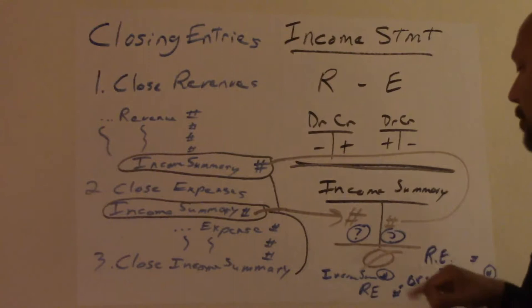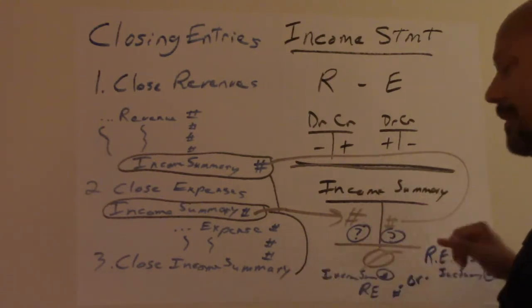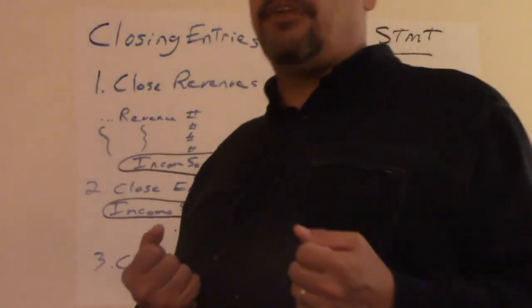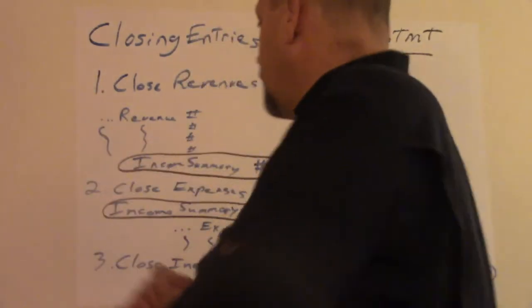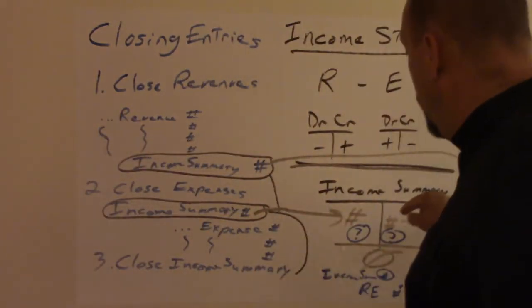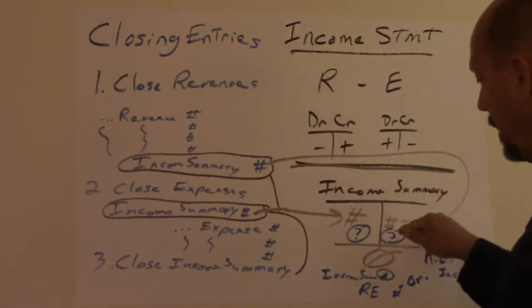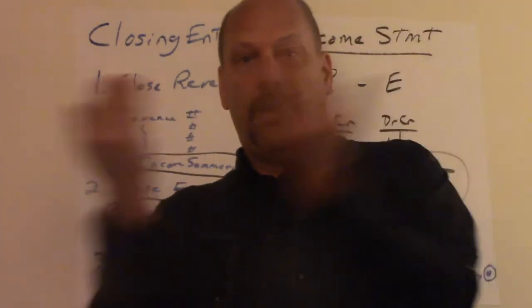So what happens? You have the two numbers and we need to close income summary out. And we close that one to retained earnings. The question is, do we debit or credit? And the answer to that one is the ever good, me being an accountant and an attorney, depends. What does it depend on? Do you need to add a number here to make these two numbers equal this one? Or do you need to add a number as a credit so these two numbers equal that one? You have to make it so the debits equal credits and it closes to zero.